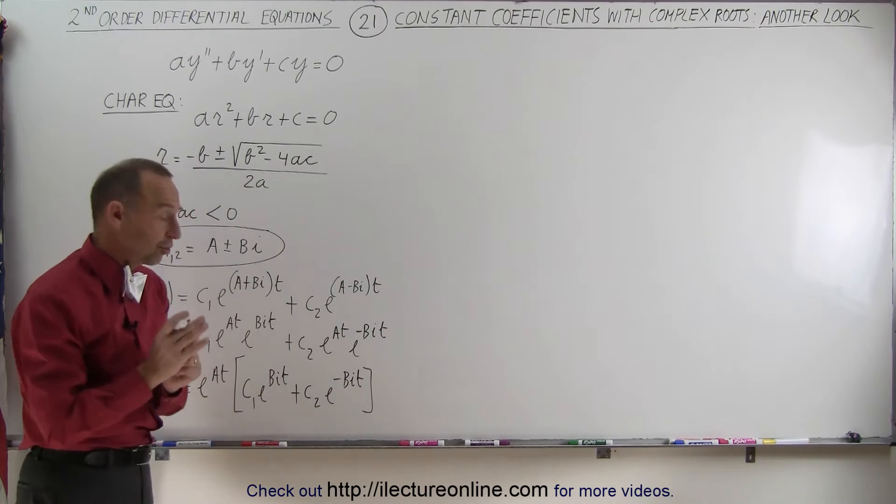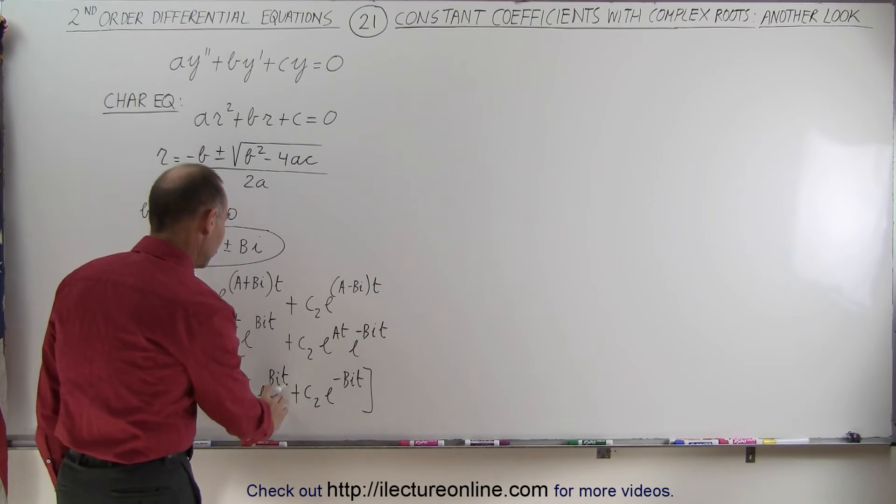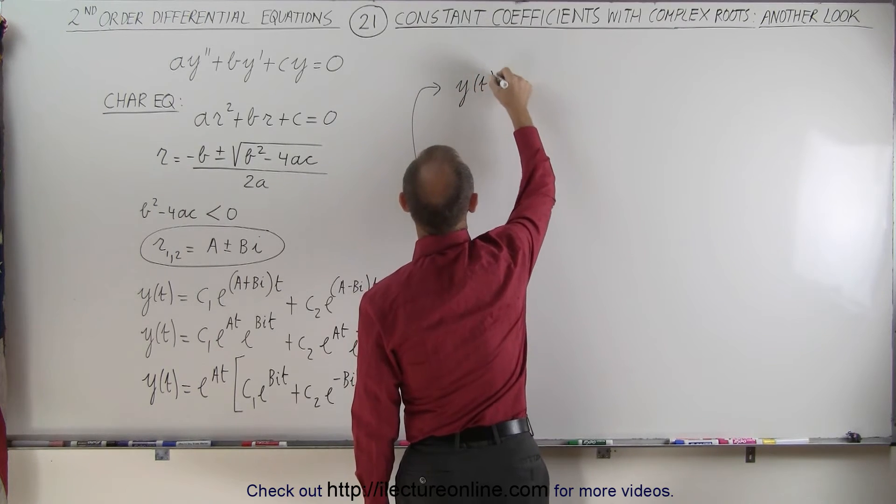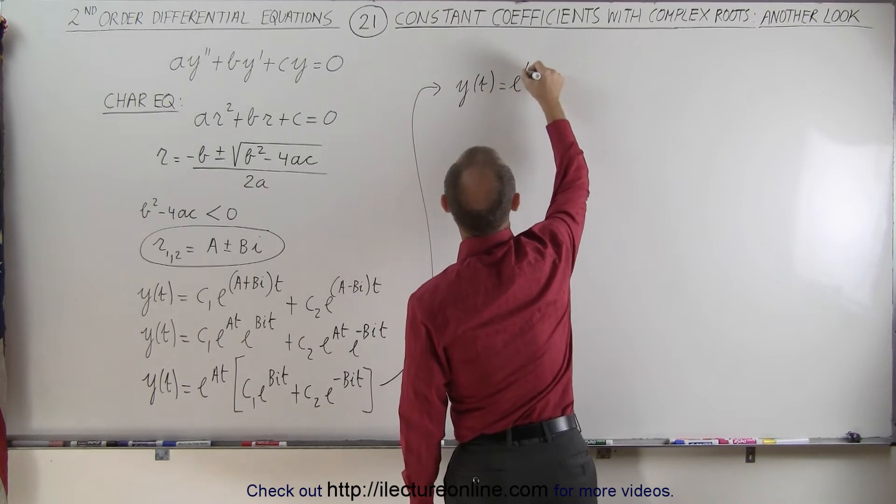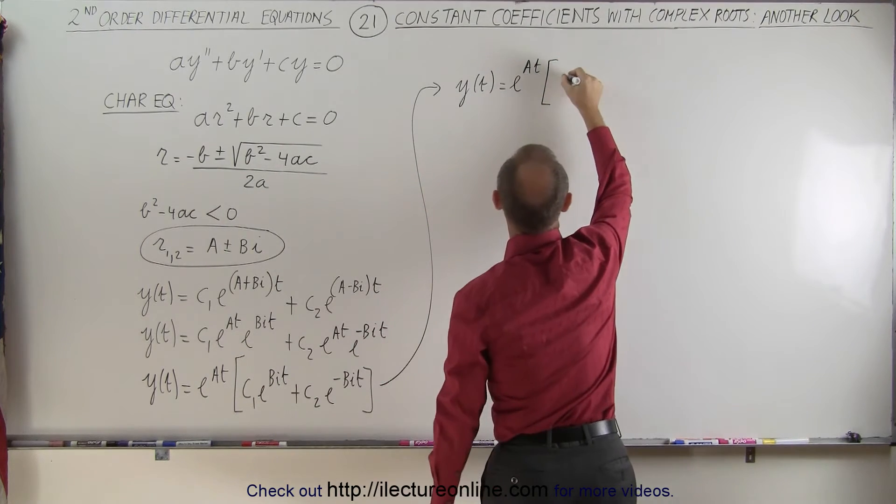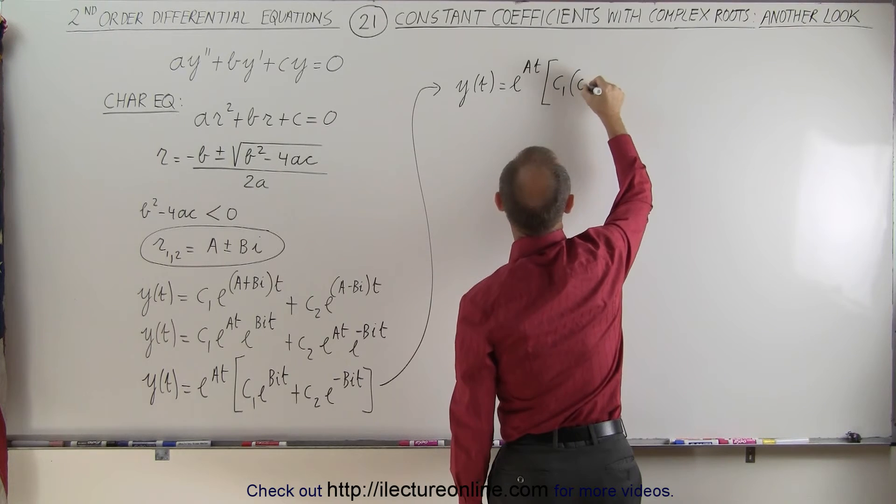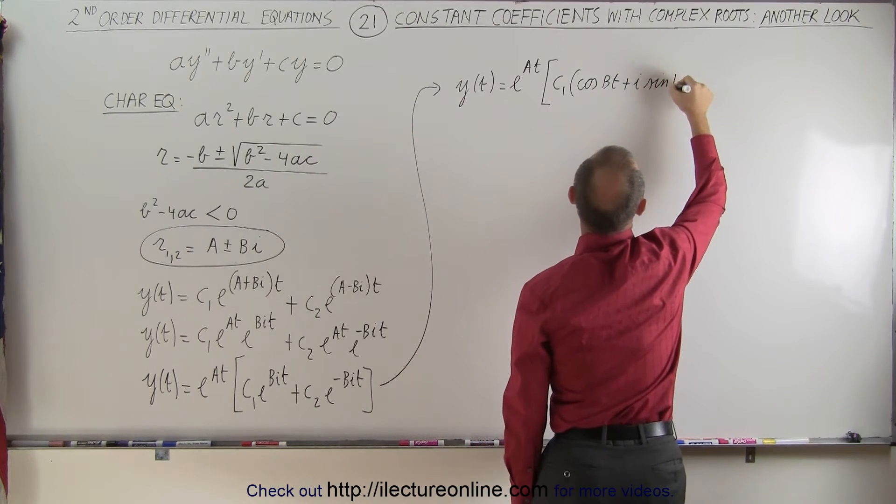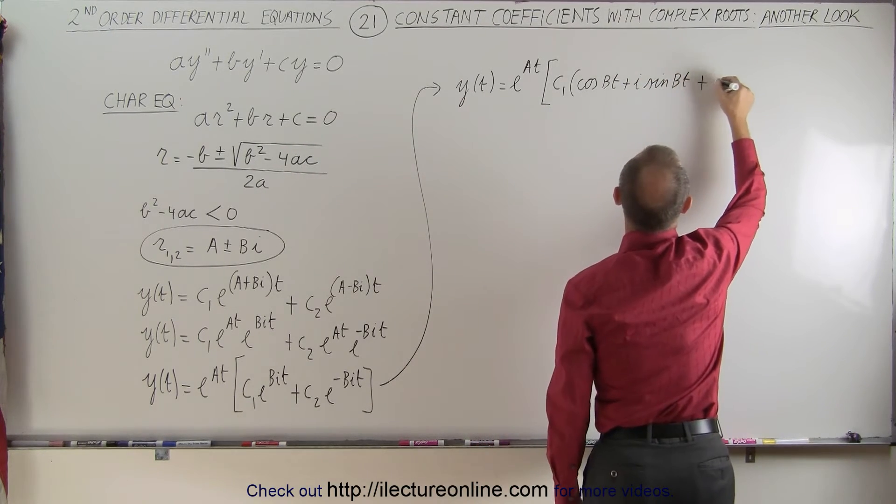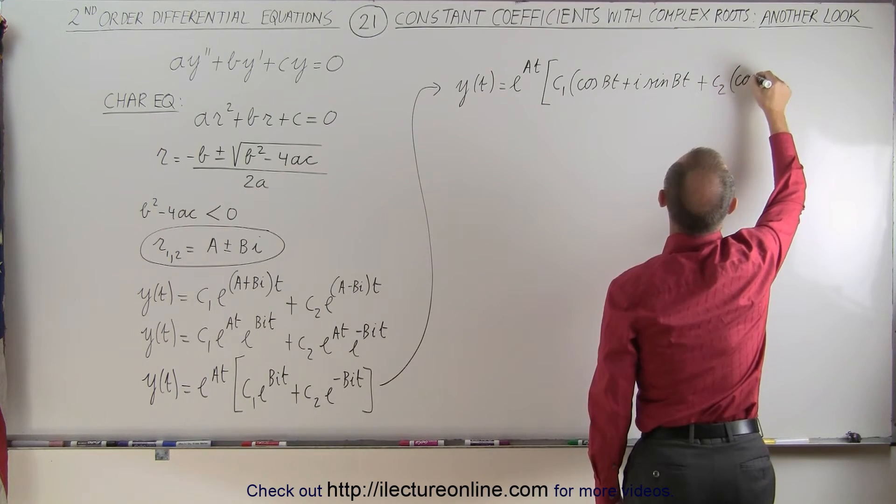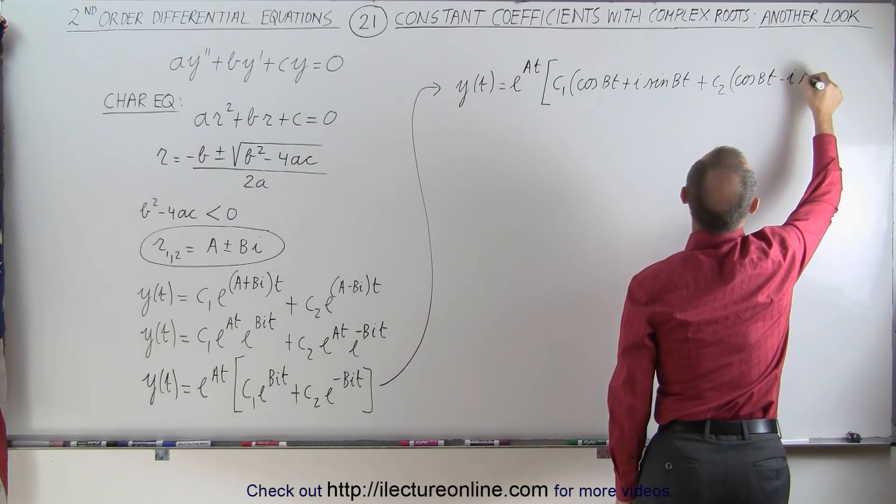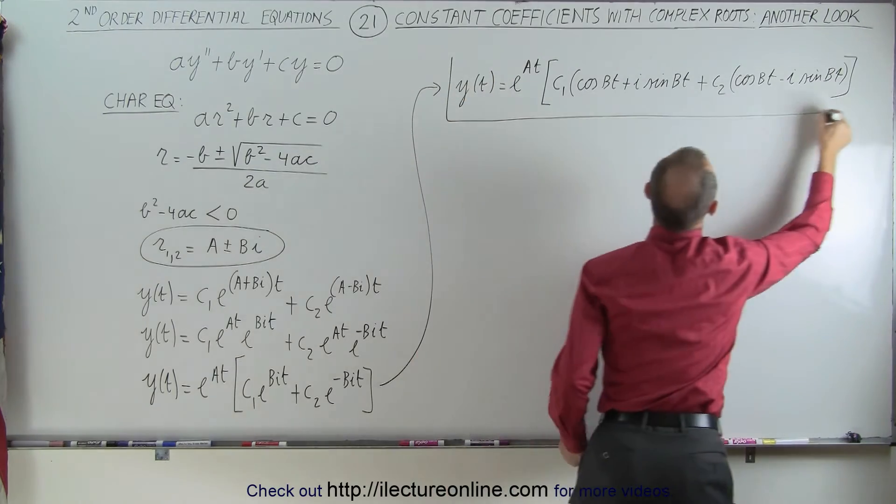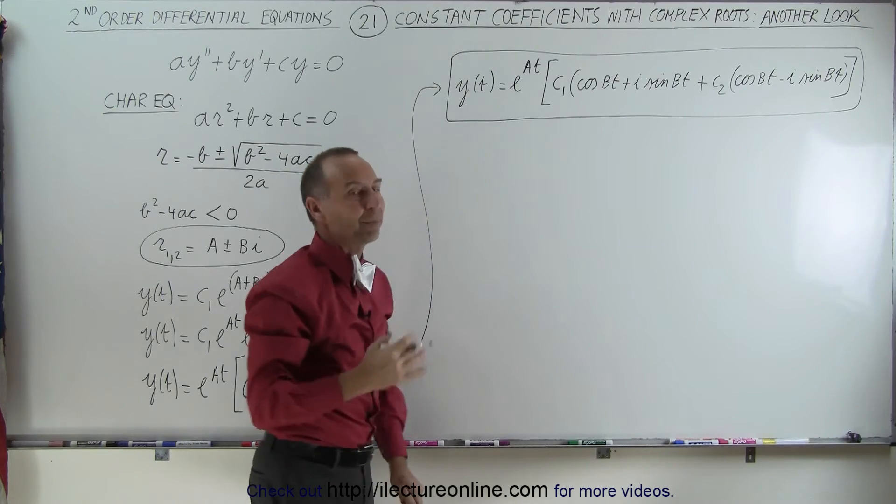Now, once we have it in this format, we can actually expand these because these are imaginary exponents. So this can then be expanded as follows. We now have y as a function of time is equal to e to the at times c1 cosine of bt plus i times the sine of bt, and then plus c2 times cosine of bt minus the i of sine of bt, like this. And that would be the general solution to this differential equation when we have complex roots.